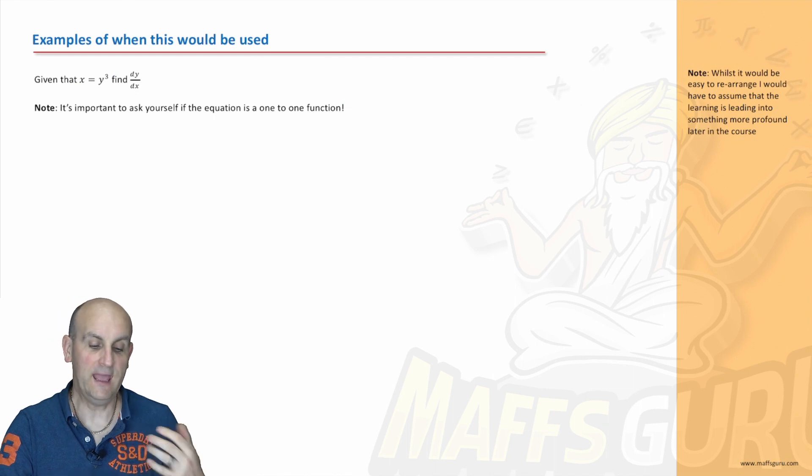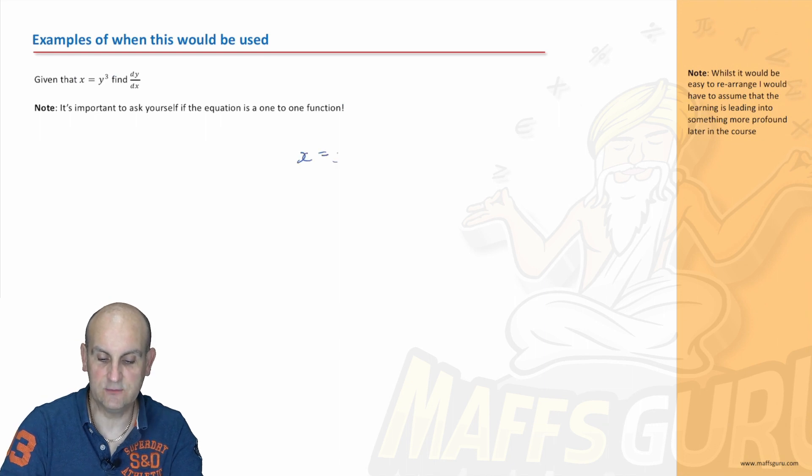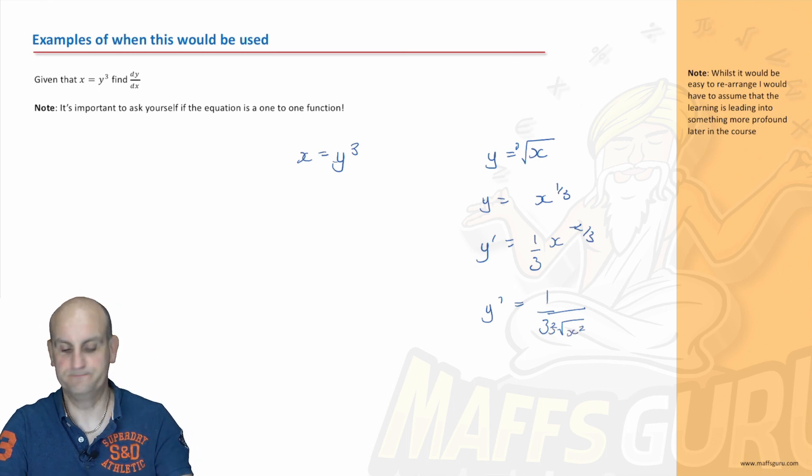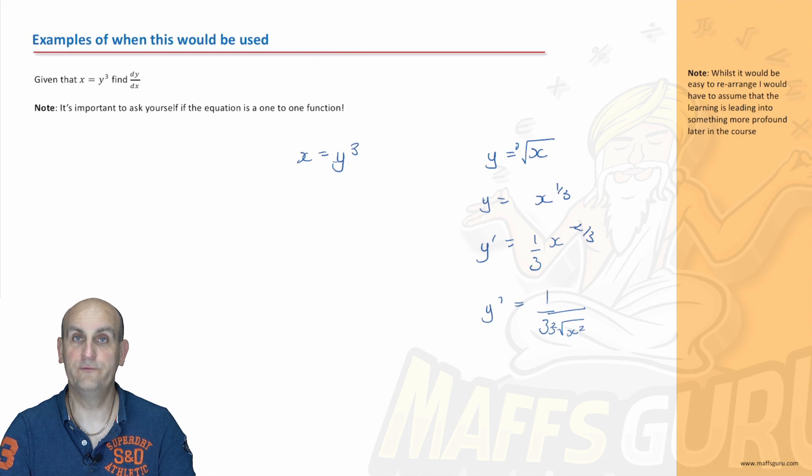So here's an example of where this might be used. x equals y cubed. Find dy by dx. Now in that situation, we've got x is equal to y cubed. Yes, we could say y is equal to the cube root of x. So y is equal to x to the power of a third. So y dashed is equal to one third x to the minus two thirds. So y dashed is equal to one on three, the cube root of x squared. And a cube root of x squared, I don't know about you, that looks disgusting. Not interested in that in any shape or form. Okay. It's practically right. But let's look at the next one.